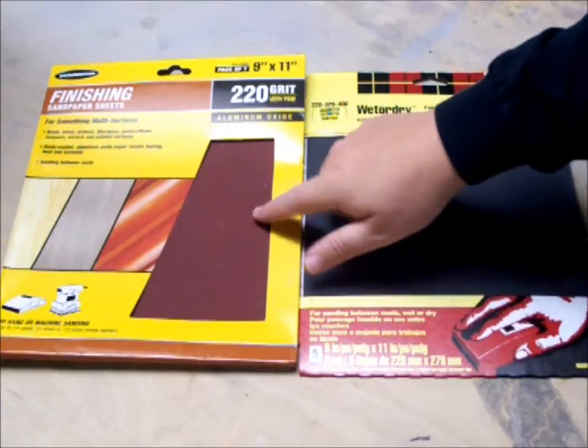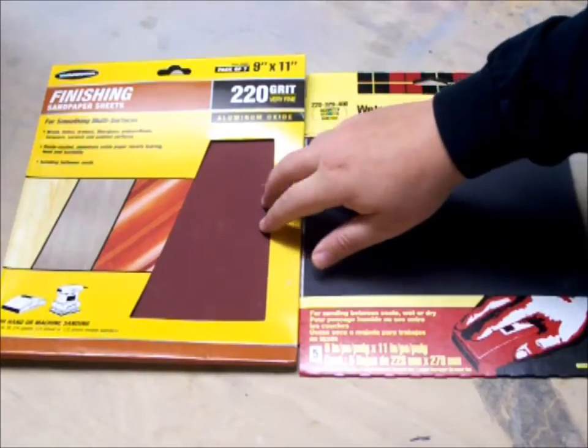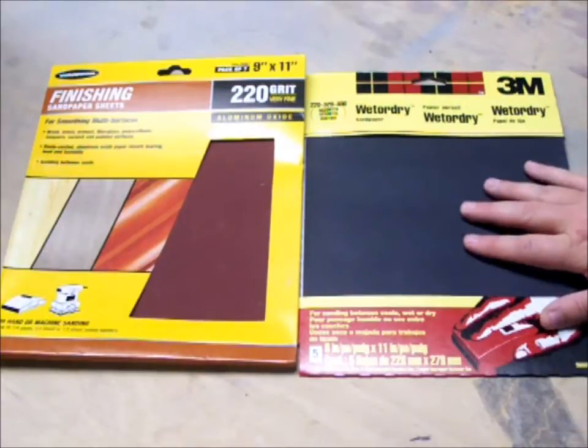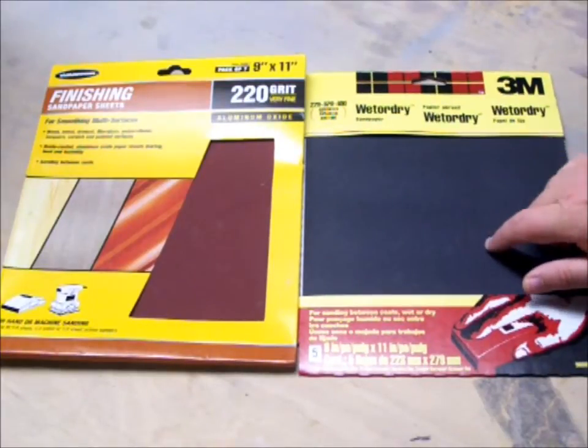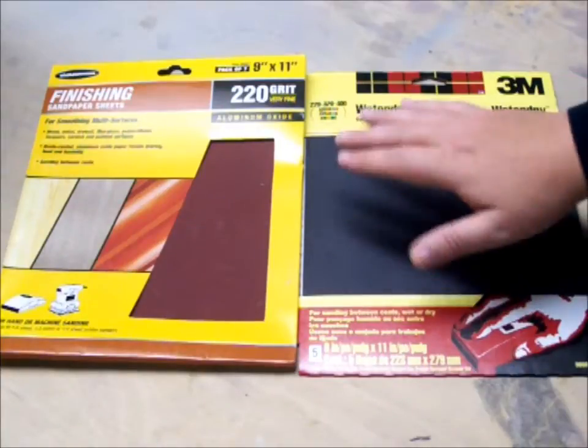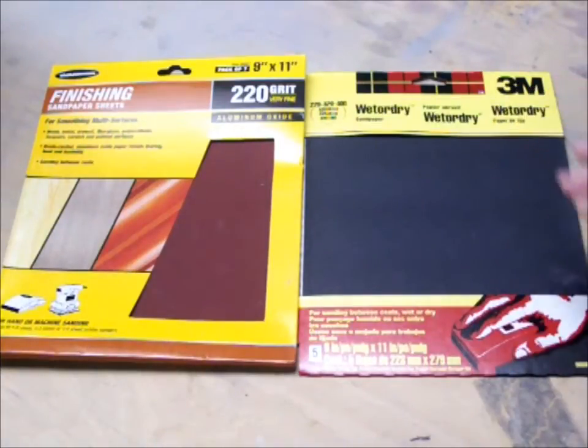On the left here we have a 220 grit paper from Harbor Freight, which looks fine, and then we have 3M 220. A lot of people would say, well sandpaper is something I'm going to be throwing away, so I'm going to get the cheapest sandpaper I can find. That is a big mistake. Let me show you why.